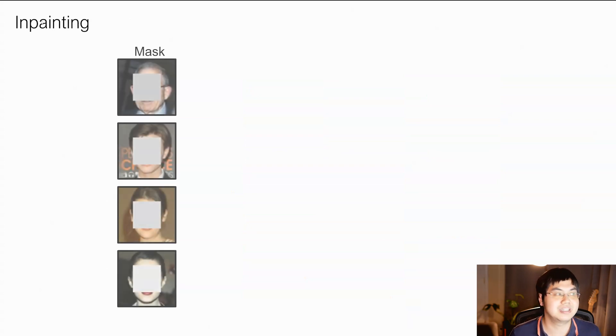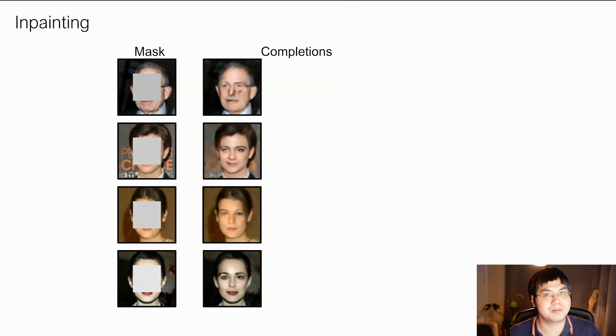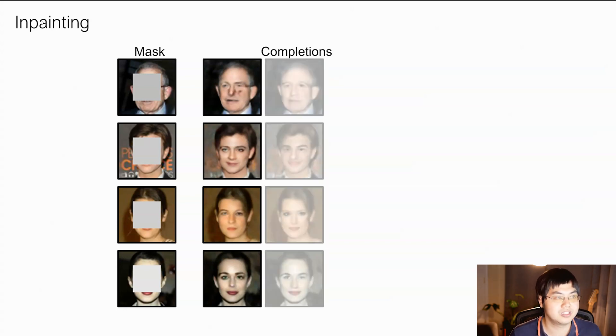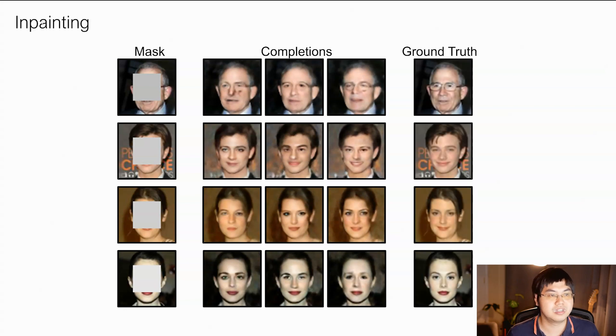Now, let's consider inpainting. Let's say I give you four images where we mask out parts of the image. Now, let's look at our completions. We find that our completions are consistent. For example, the eyes of the person are correctly constructed, as well as the corresponding eyeglasses and mouth. Similarly, for this completion and this third completion, notice how the ground truth looks fairly similar to our completions.